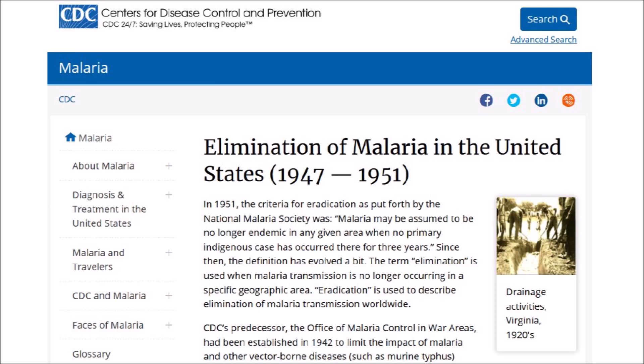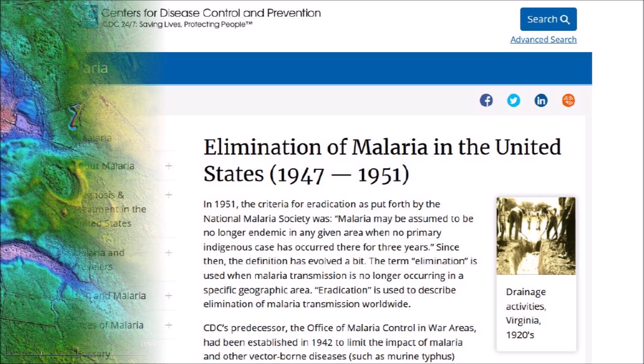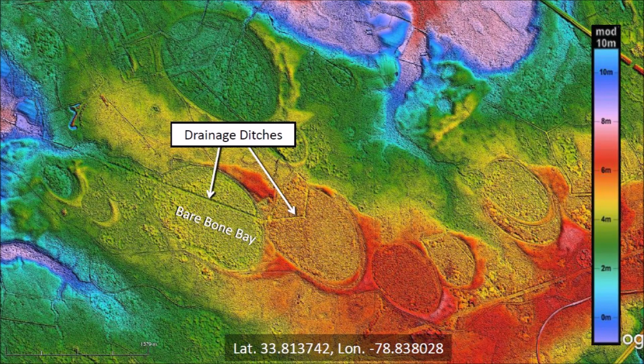Mosquito populations were also reduced by digging ditches and draining the swampy areas where mosquitoes bred. Carolina Bays are swampy because the water table is usually within 5 feet of the surface. Draining the bays makes the land available for cultivation of crops and for urban development. Bare Bone Bay has a draining trench leading toward a stream to its west.